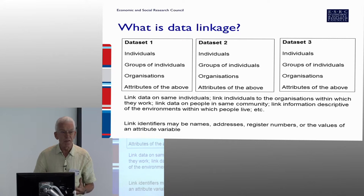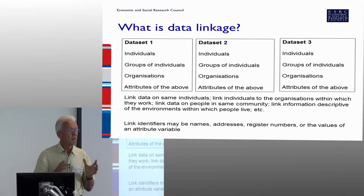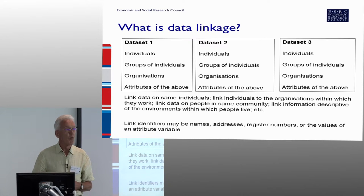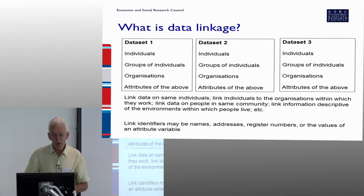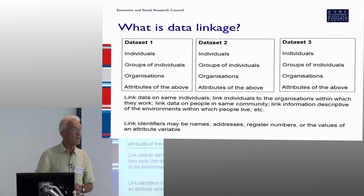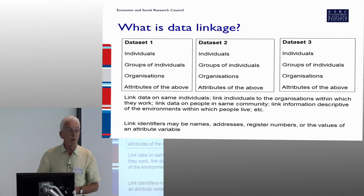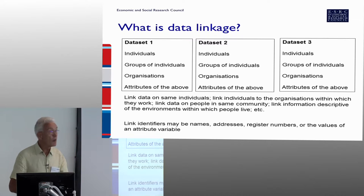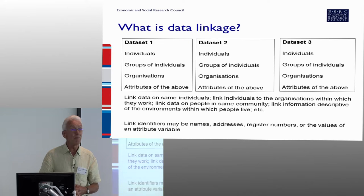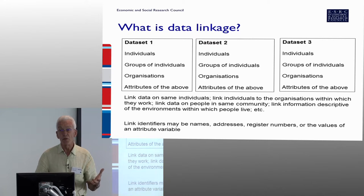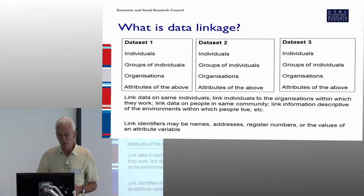We think a lot about privacy and consent as issues — we'll come back to these later — but sometimes that's not the real issue. The real issue is about commercial value, or fairness, or justice. So I've introduced the concept here of a link identifier. That link identifier we often think of as a name and address of an individual, or a register number — your national insurance number, your taxation number, your national health number. Or it might be the values of an attribute variable that sits within those data, such as information on the occupation within which you work, which you're going to link to information about occupations held in another dataset.